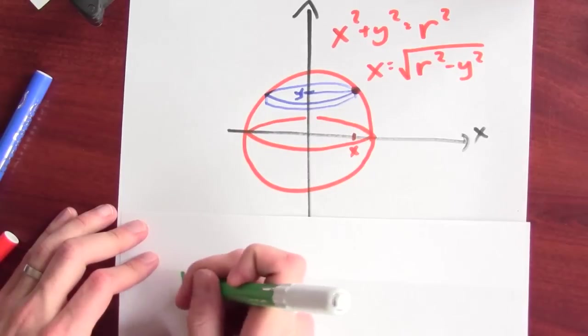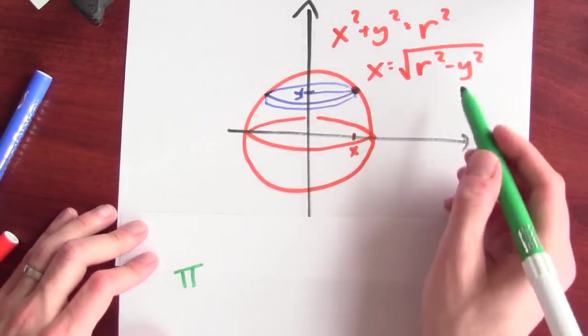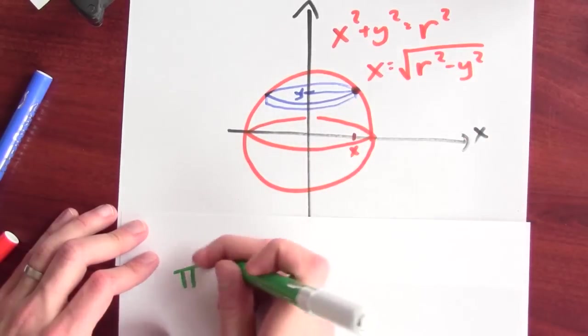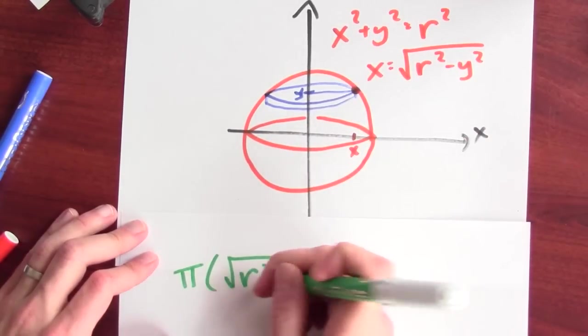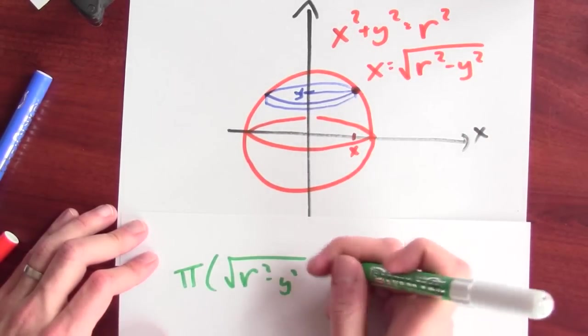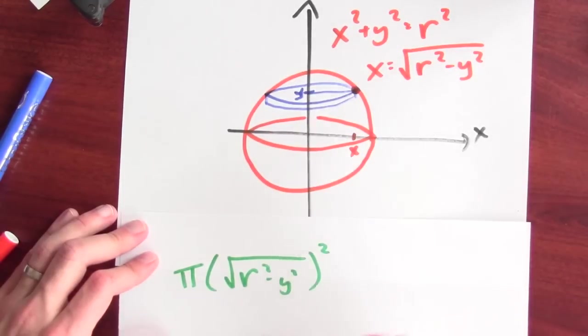It's pi times the radius of that cylinder, which is given by this. So, the radius is the square root of r squared minus y squared. And it's that radius squared.